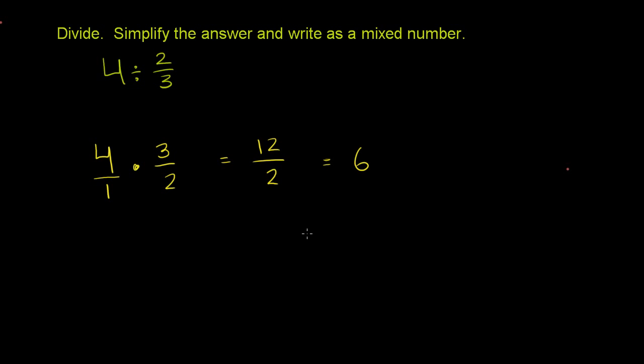Or another way we could think about it is divide the numerator by 2. Well, that would give you 6. And divide the denominator by 2. That'll give you 1. 6 over 1, which is the same thing as 6.